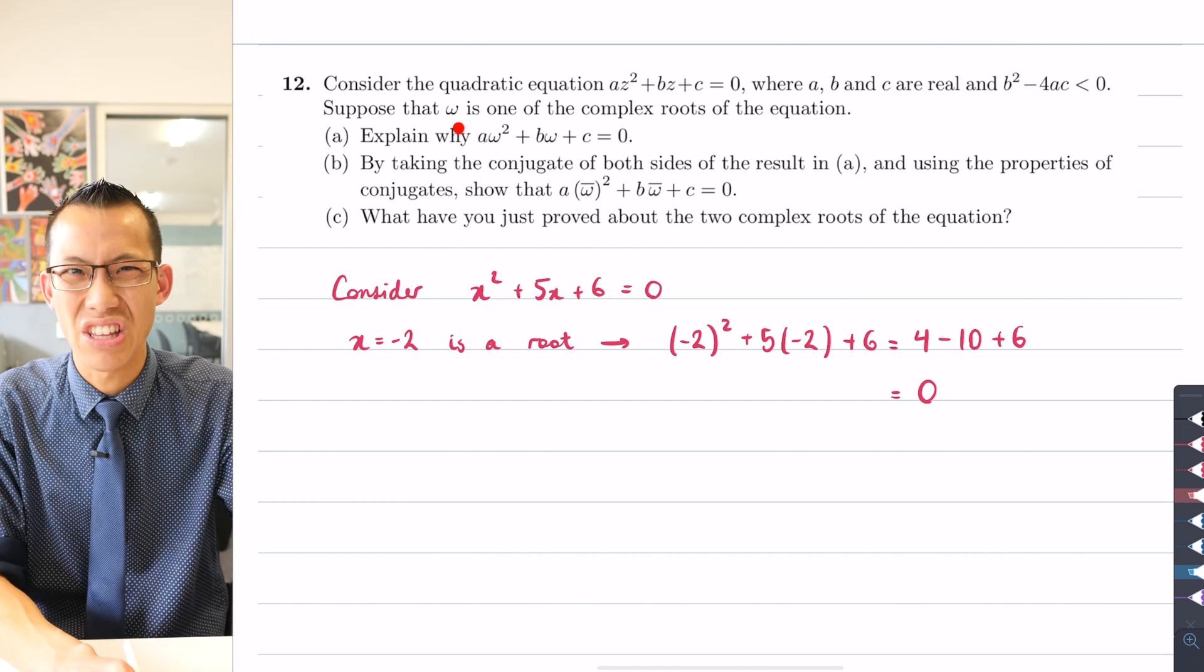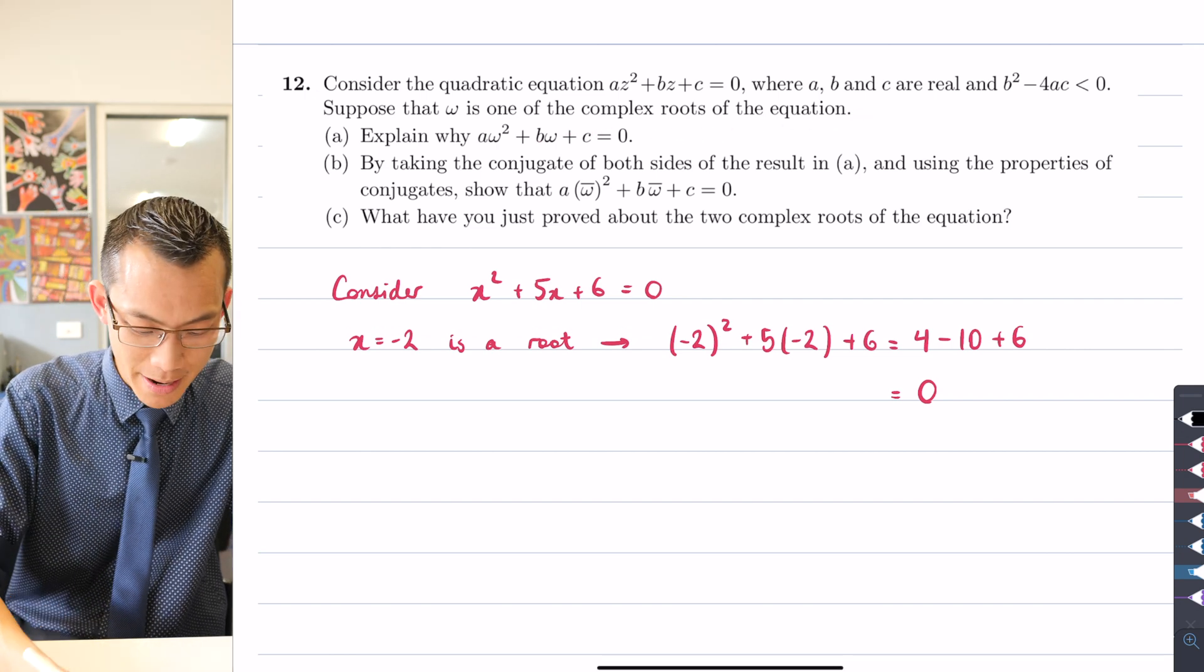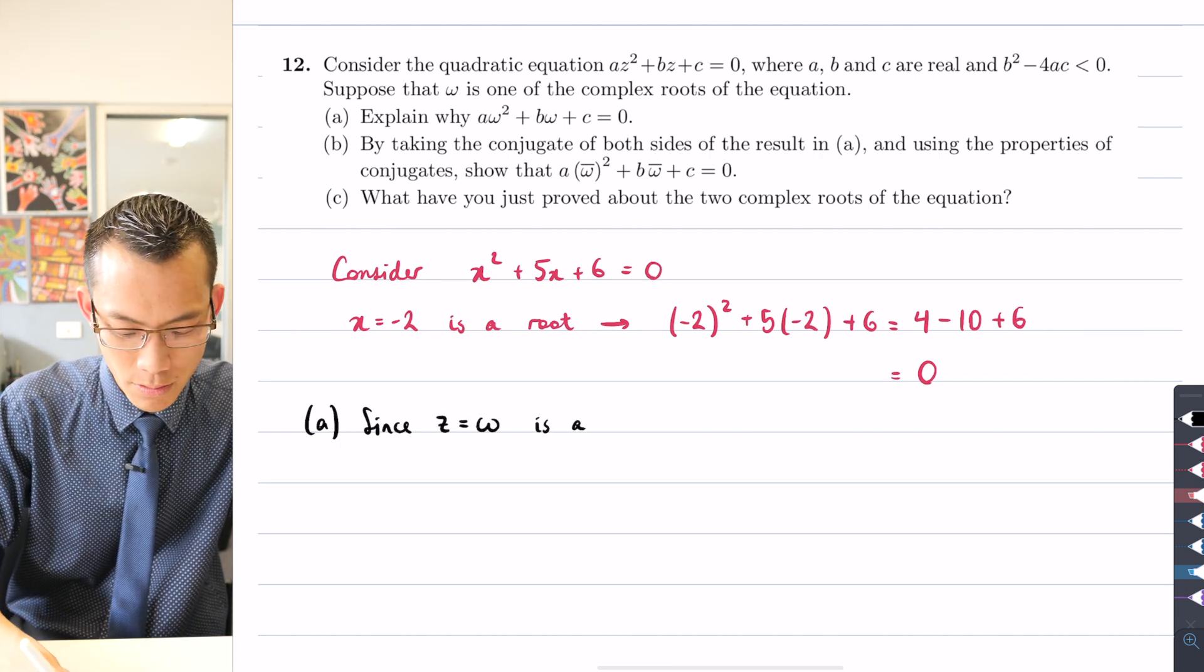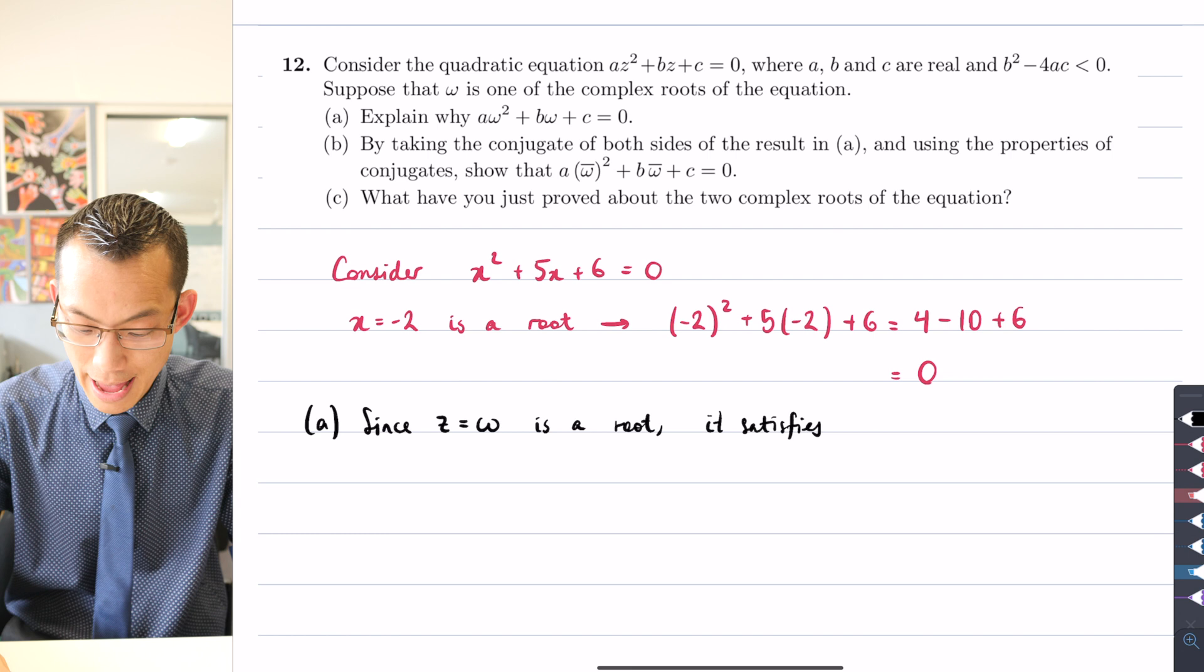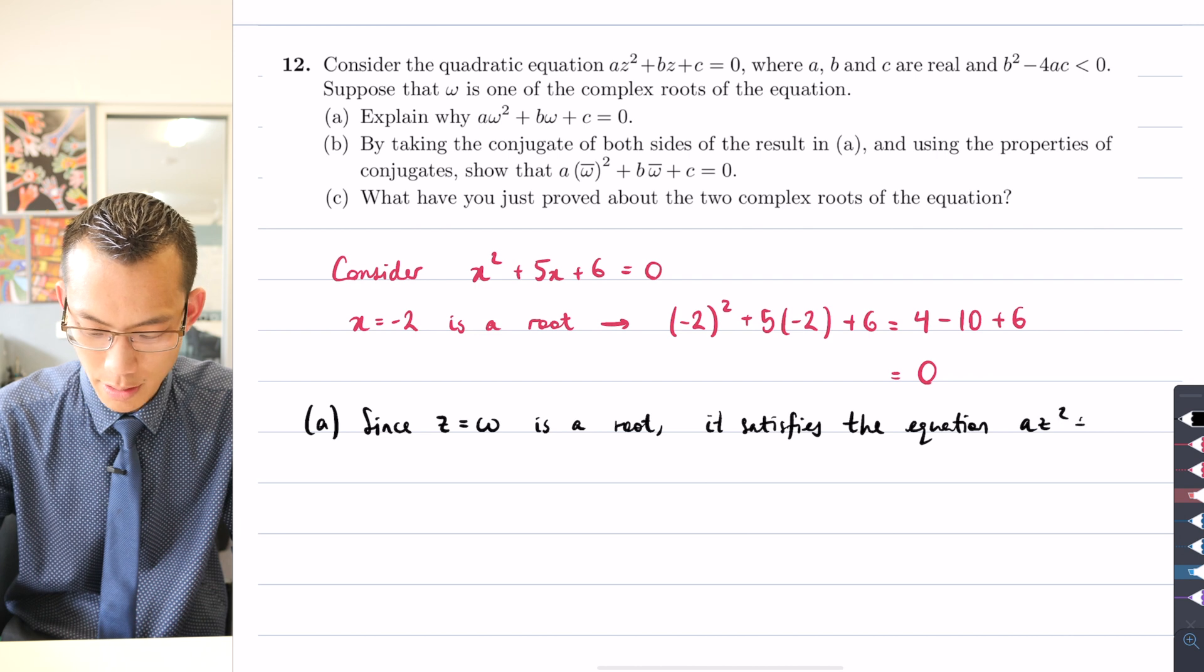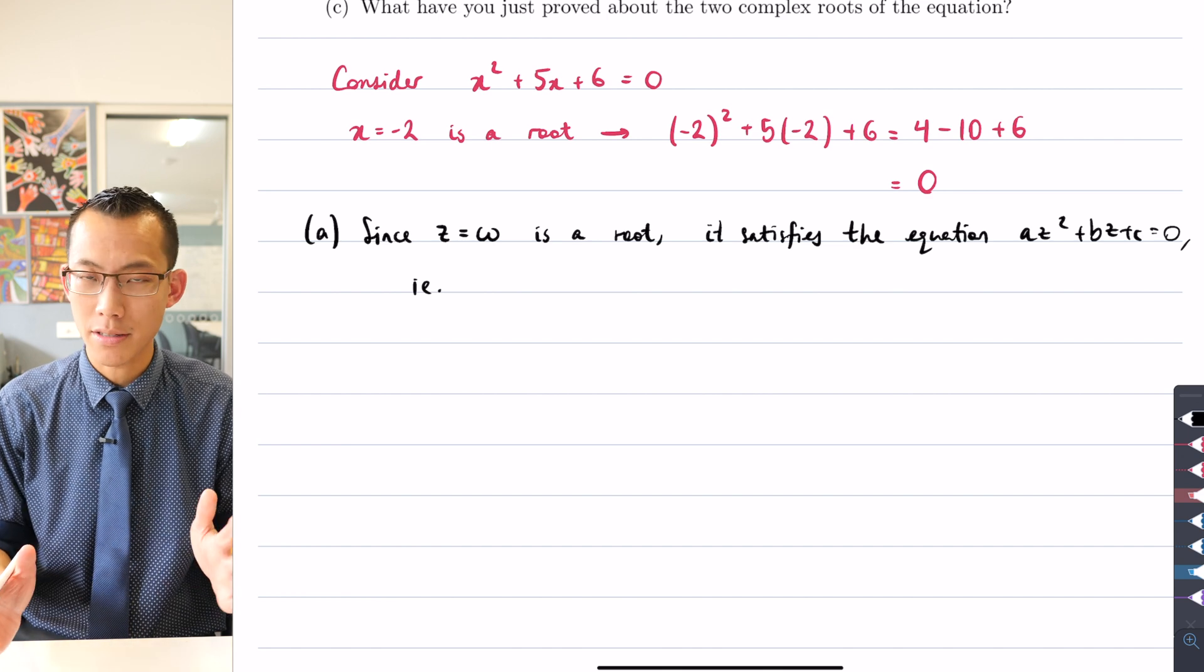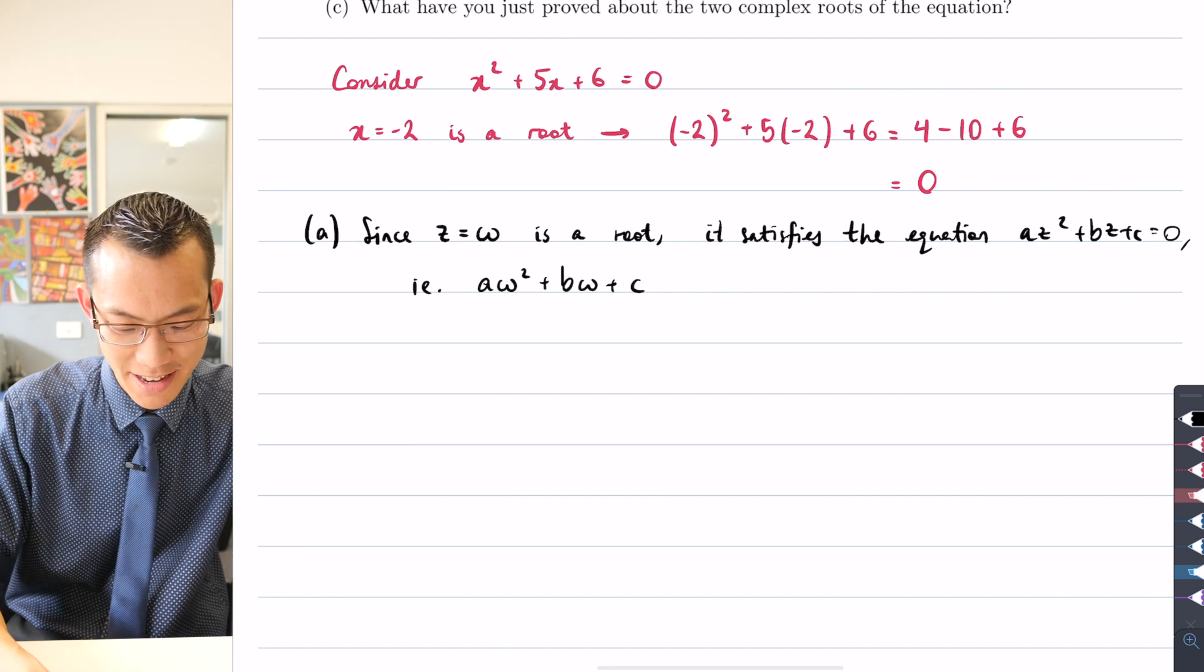Now in this case, for the question we're interested in, they're calling one of the roots omega. They're just giving it that name. They're saying omega is one of the complex roots of this equation, so I can say here's my actual—here's my part (a) proof, if you can call it that. Since z = ω is a root, it satisfies the equation, and so because the equation is az² + bz + c = 0, what that means is to satisfy the equation means if we substitute it in, it all works, it's still equal. So I can say aω² + bω + c = 0.